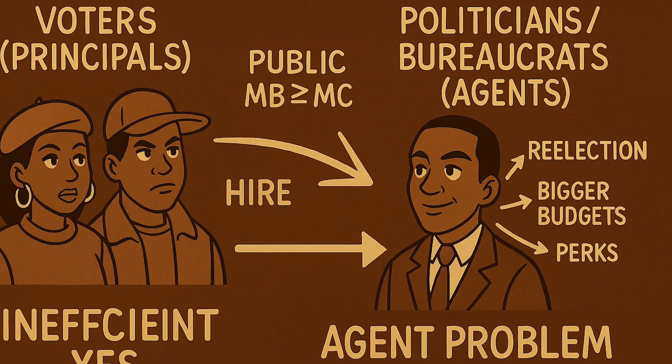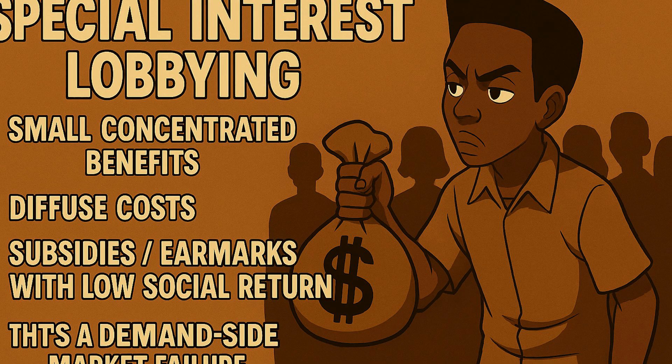Even when government knows what citizens want, execution can still be inefficient. Common sources of government failure: first, principal-agent problems — voters (principals) hire politicians (agents) who may pursue re-election, budgets, or perks instead of true MB greater than MC efficiency. Second, the special interest effect: small groups with big gains lobby hard while costs are spread thinly across many taxpayers, passing subsidies or earmarks with low social return.